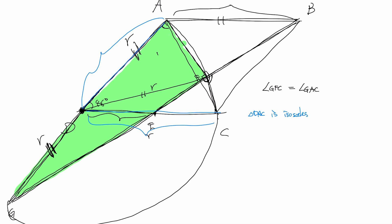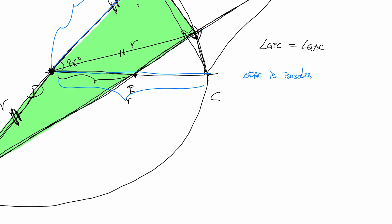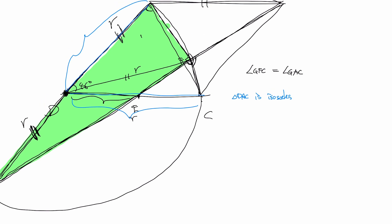So triangle DAC is isosceles, which means that what we have over here is we just say 180 degrees minus that 46 degrees, and then divide by 2. 180 degrees minus 46 degrees divided by 2, we can calculate that. That's 134 degrees divided by 2, or that is 67 degrees.